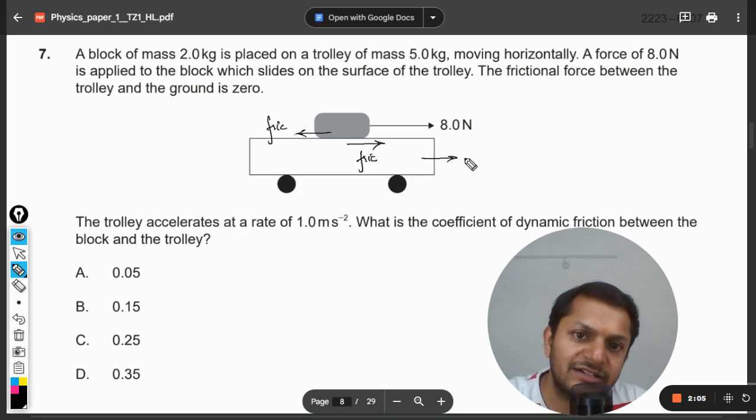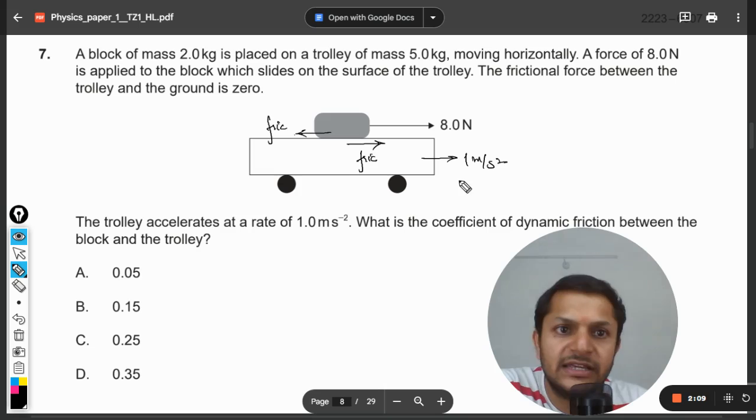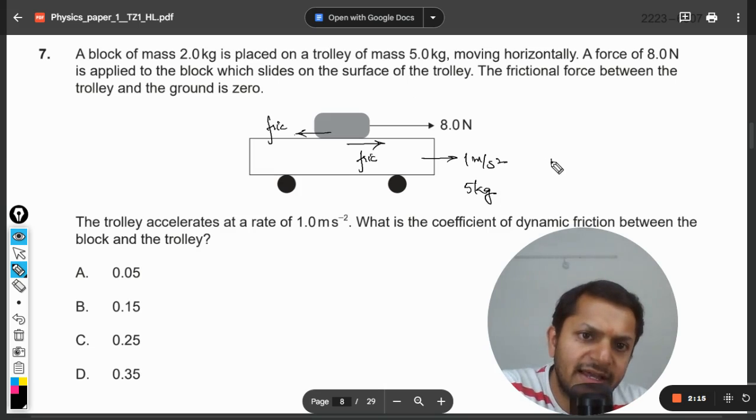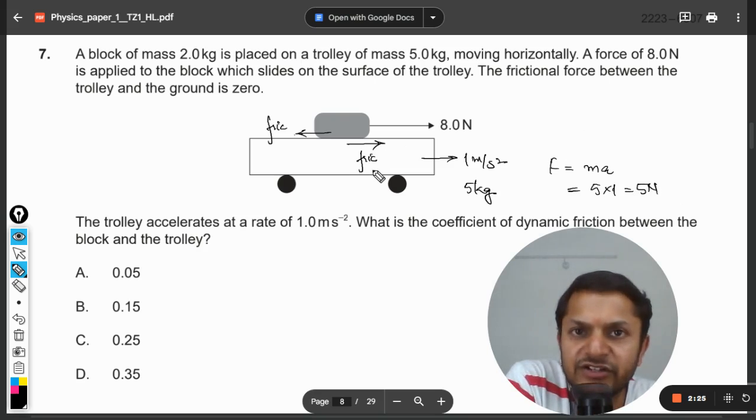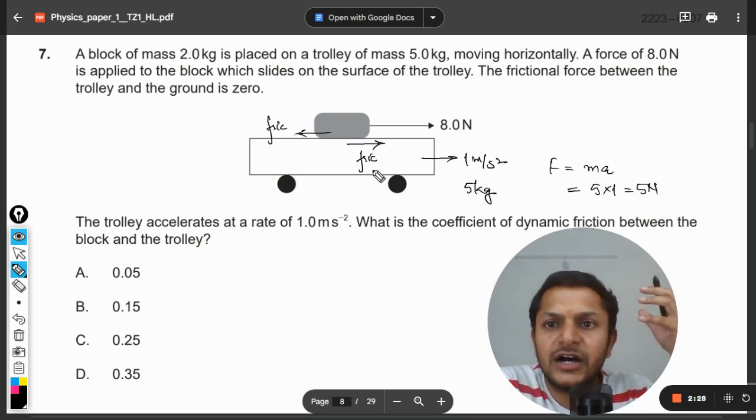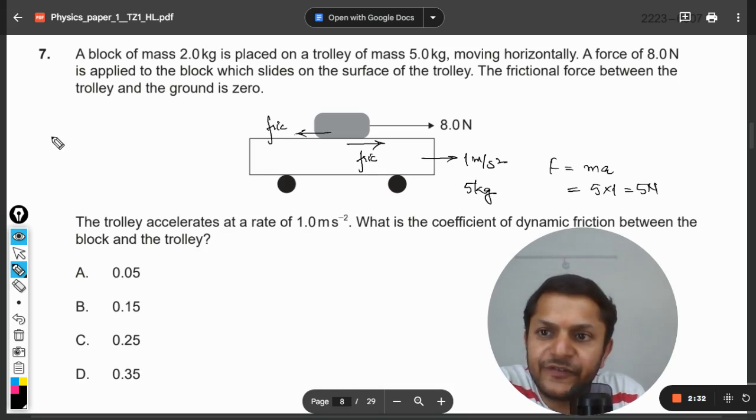Now it is said that the acceleration of this is one meter per second square and the mass of the trolley is 5 kg. So I can say that the force experienced by the trolley should be 5 newton. So 5 newton will be the friction because friction is the only force which is trying to drag the trolley towards right hand side. So friction magnitude is 5.